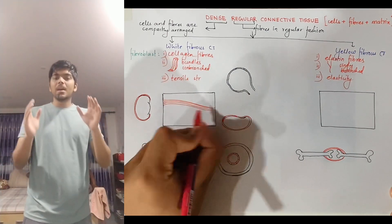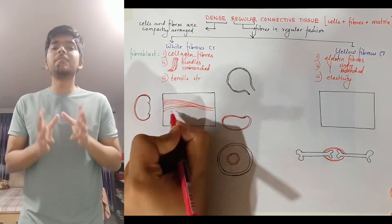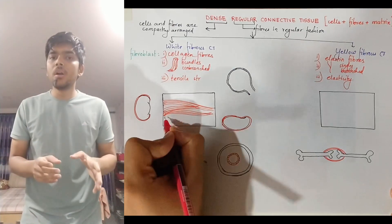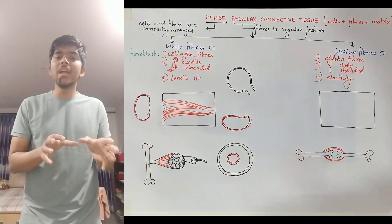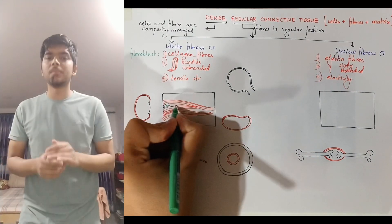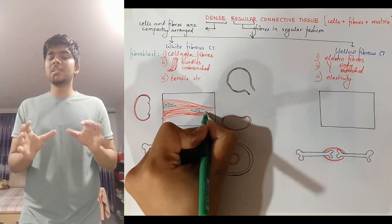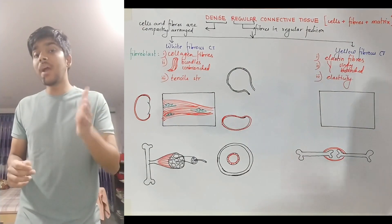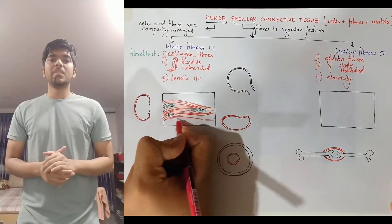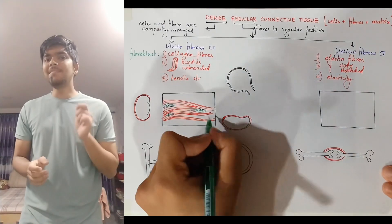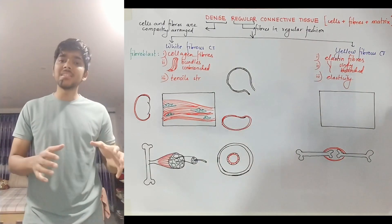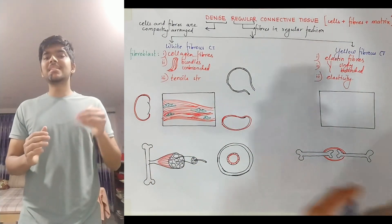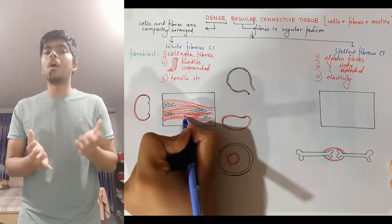Now let's look at the diagram. In the black box I'm going to draw white fibrous connective tissue. It looks something like this — collagen fibers found in bundles, unbranched. The tissue majorly consists of these fibers and looks white due to the presence of protein collagen. There are very few fibroblasts — fewer even than those present in areolar connective tissue — and these cells and fibers are present on a matrix.